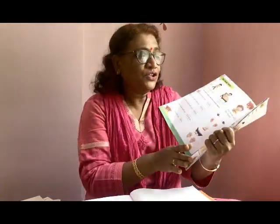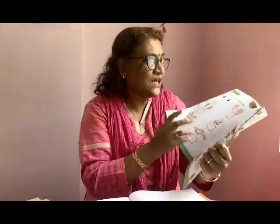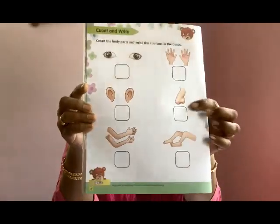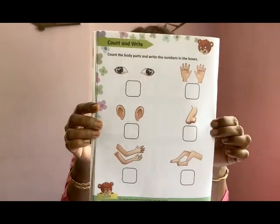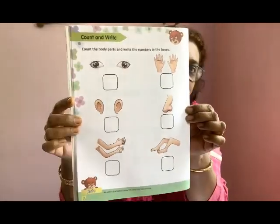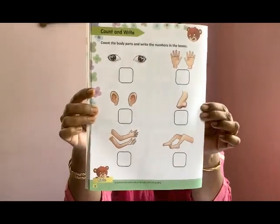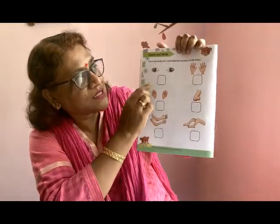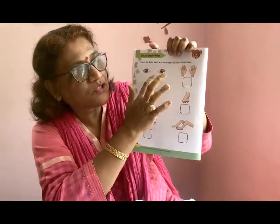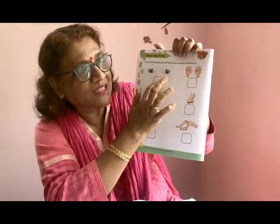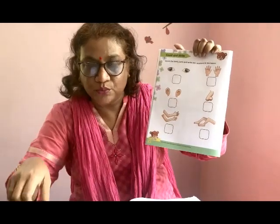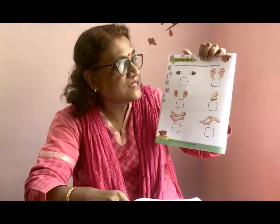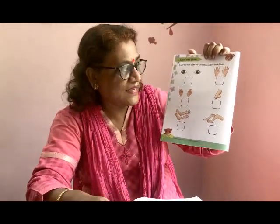Now children, you will turn over to page 8 in your EBS book and you will do this. How many eyes, children? You will write here 2. How many fingers? 10.